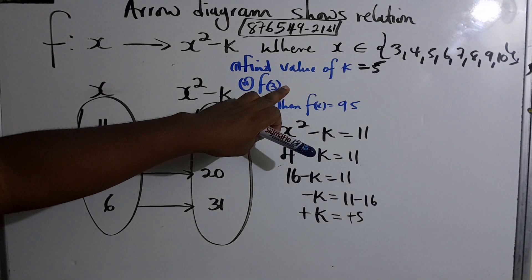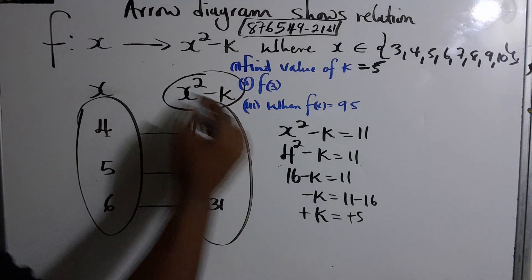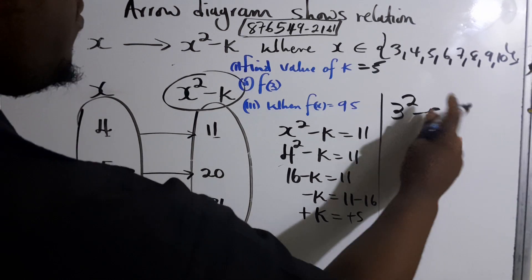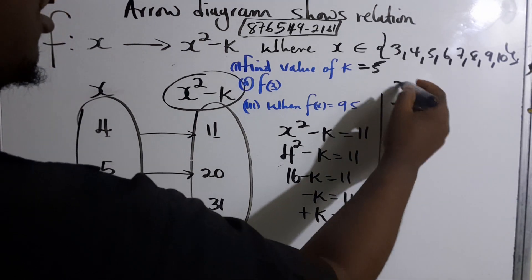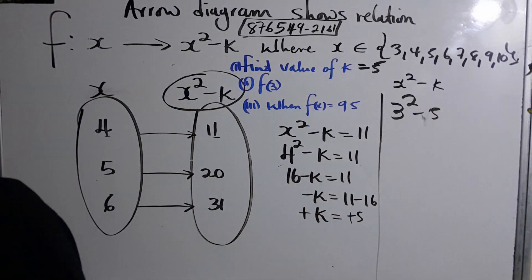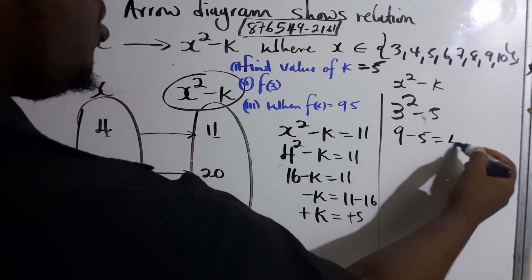Now we're supposed to find the value of f(3). This is the formula, so it would be 3² - 5 because we know k is 5. 3² which is 9 minus 5 equals 4. So f(3) = 4.